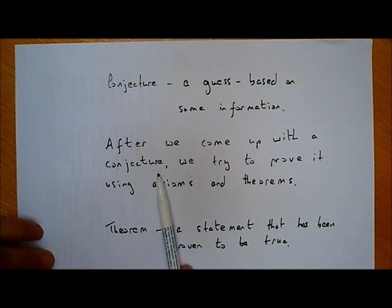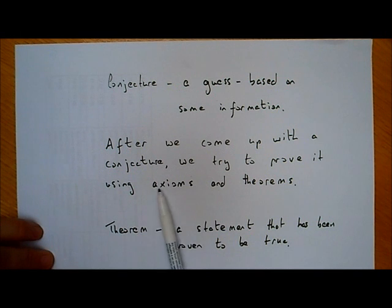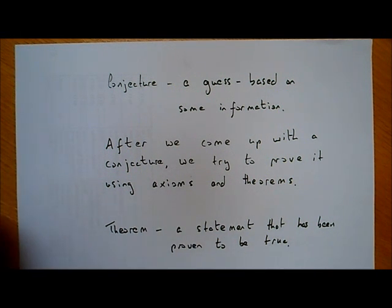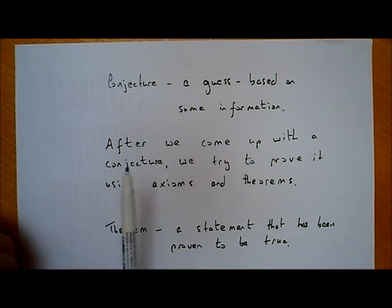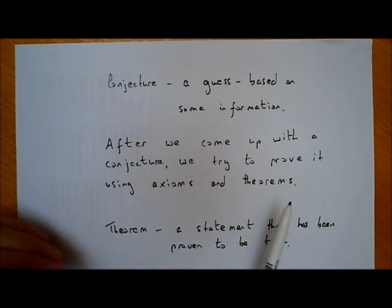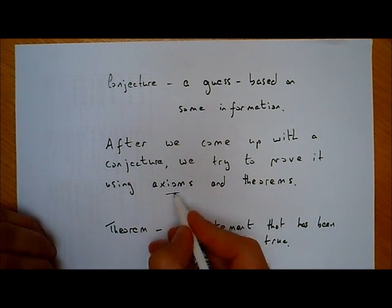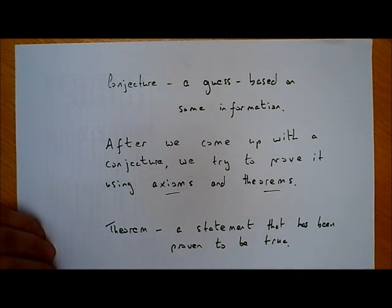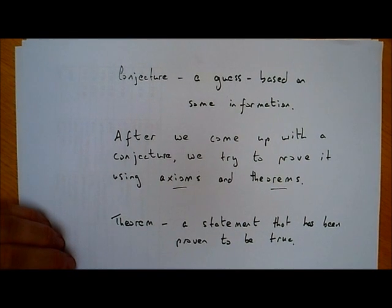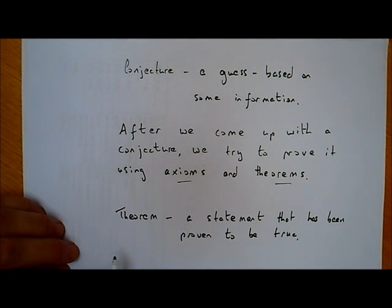After we come up with a conjecture, what we usually try to do is prove it. We might be doing some maths problem, we see maybe a pattern or whatever, and then we try to prove that this pattern continues. We try to prove it using axioms and theorems. And that leads us on to the last definition, which is the definition of a theorem.